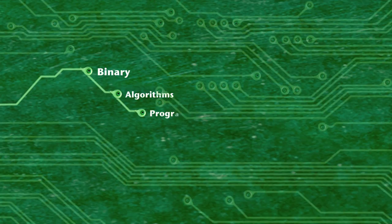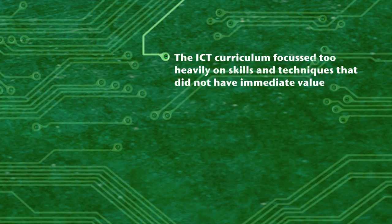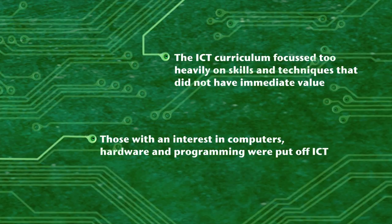It was concluded that the school ICT curriculum focused too heavily on skills and techniques that did not have an immediate value to the pupils, and this was what made ICT so unpopular. Also, those with an interest in computers, hardware and programming were put off ICT — they didn't realise that GCE computing was very different. From that initial meeting formed a grassroots organisation, Computing at School. CAS now has a membership of over 3,000 teachers, all of whom are looking for better ways of teaching the developing subject of computing.